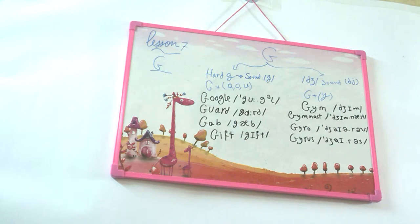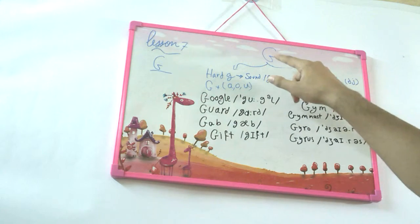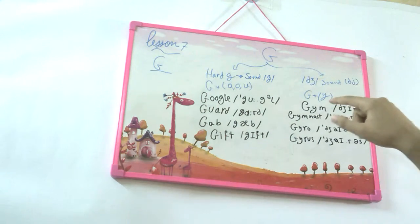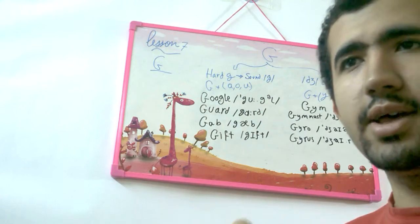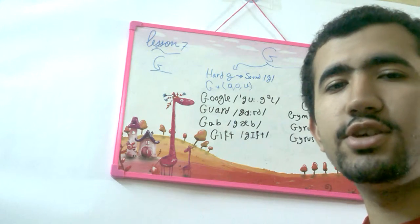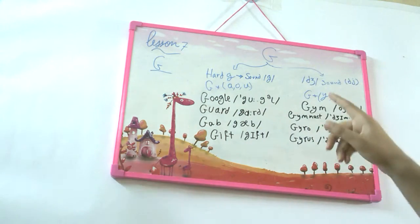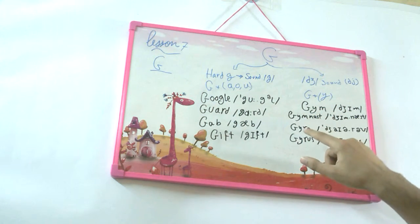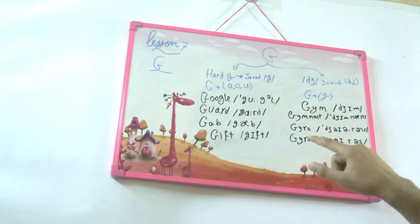The second pronunciation for G is DJ, DJ, DJ sound, especially when G is followed by I, E, or Y. It's pronounced as DJ, like gym, gym nest, gyro, gyrus.